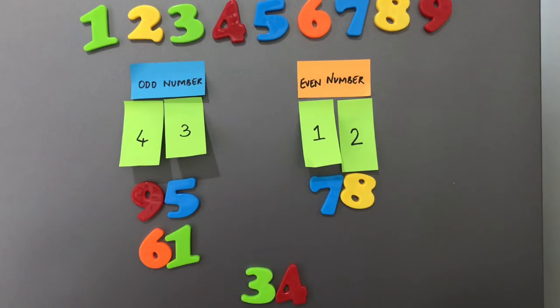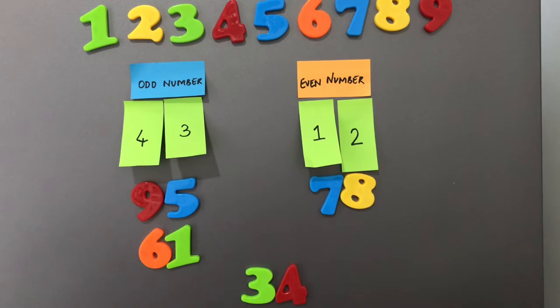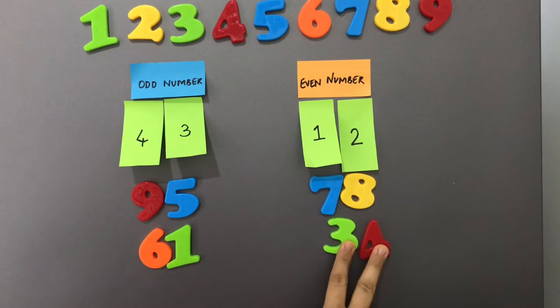Next we have number thirty four. Four fingers out. We form our pairs. No finger left alone to play. So thirty four becomes our even number.